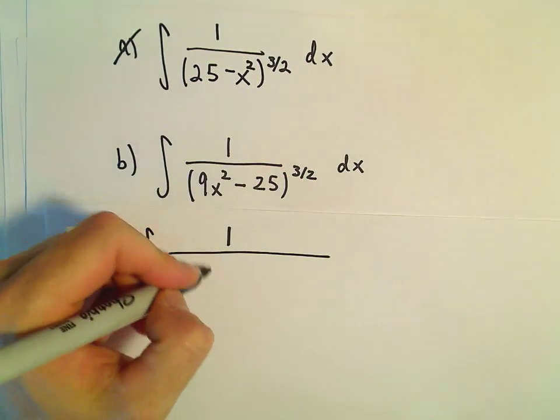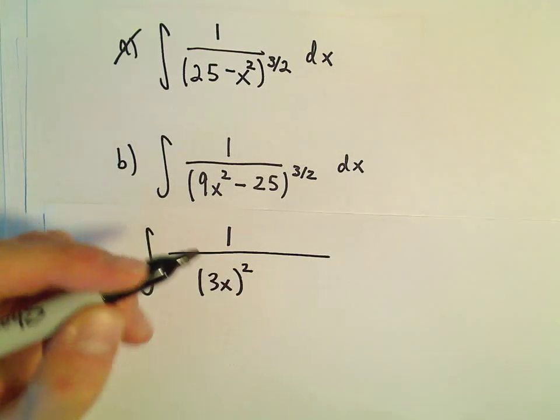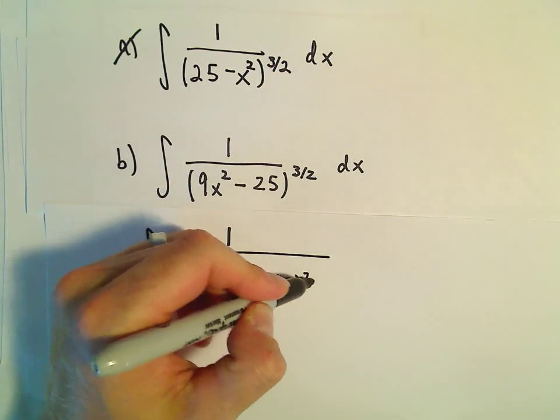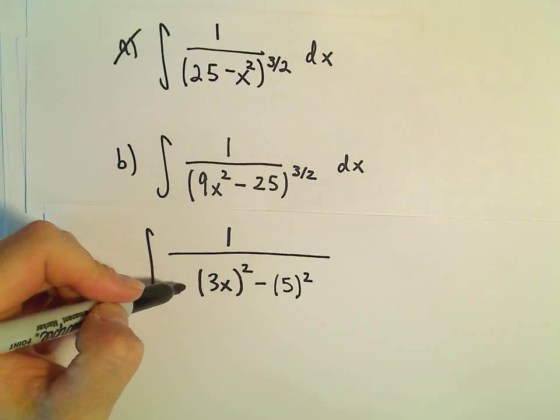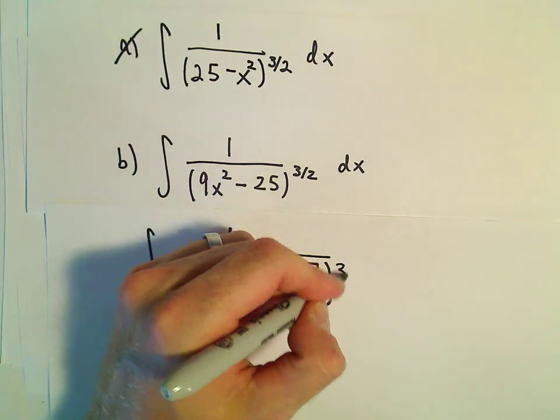I'm going to do a few steps here. I'm going to rewrite the 9x squared as 3x squared. Again, I didn't do the numerical part in the other examples, but we can write the 25 as 5 squared. All of that would go under the square root, and then that would be cubed.